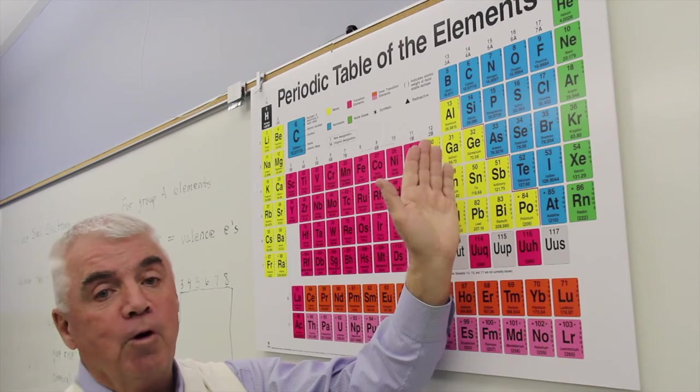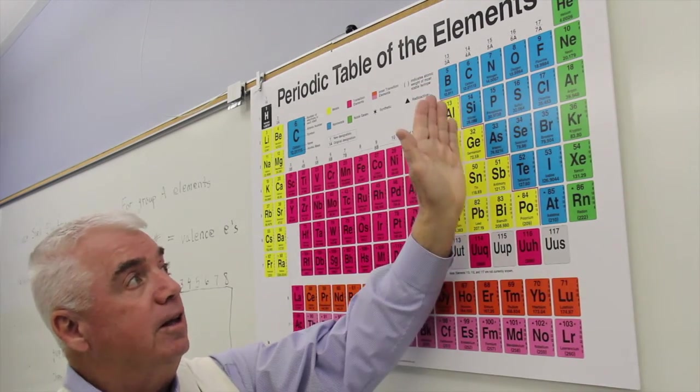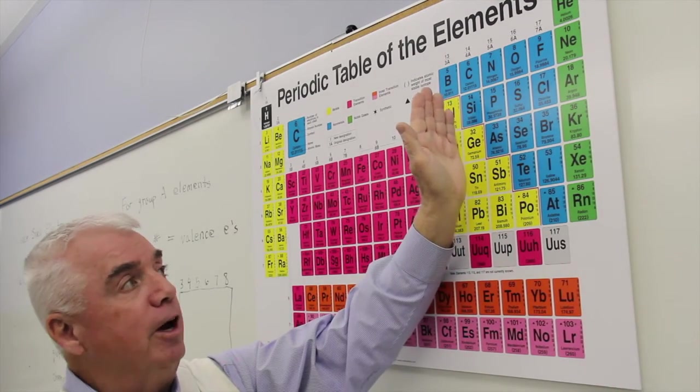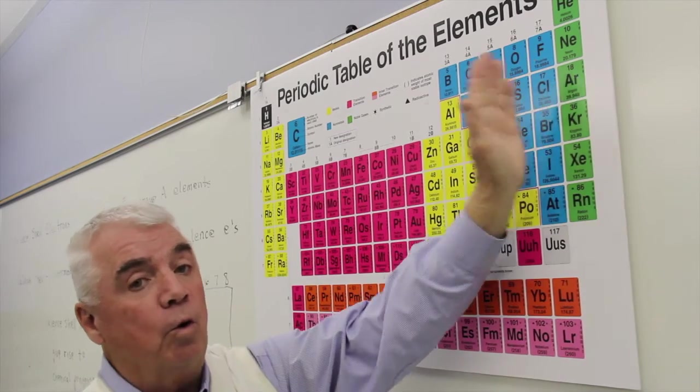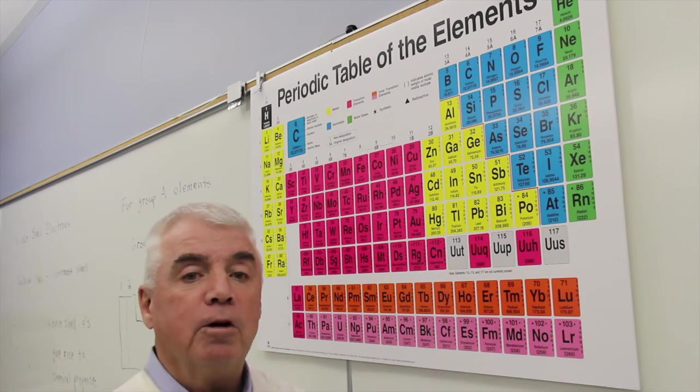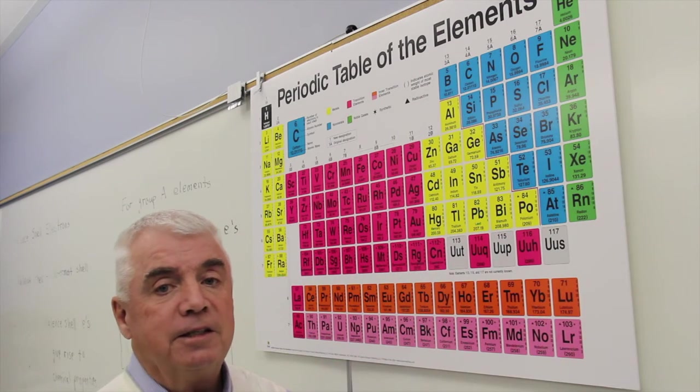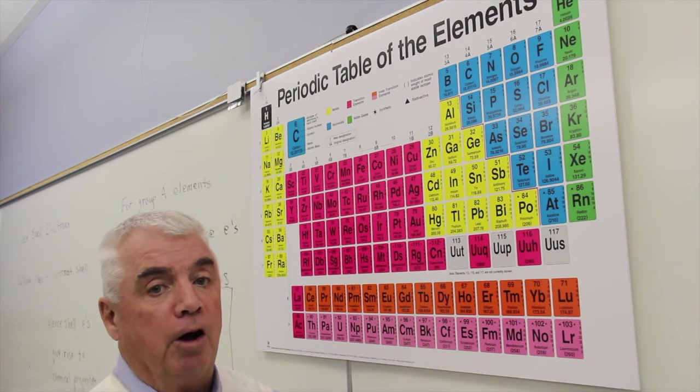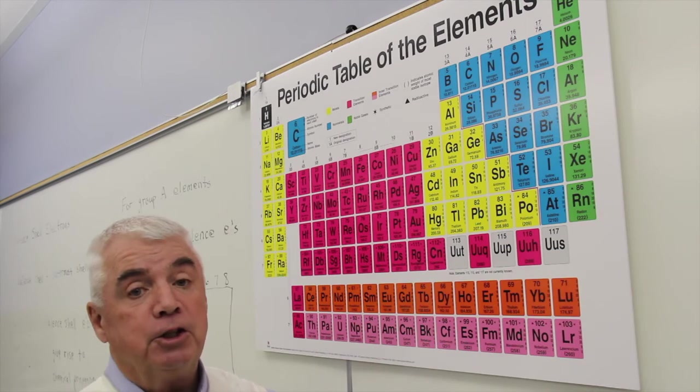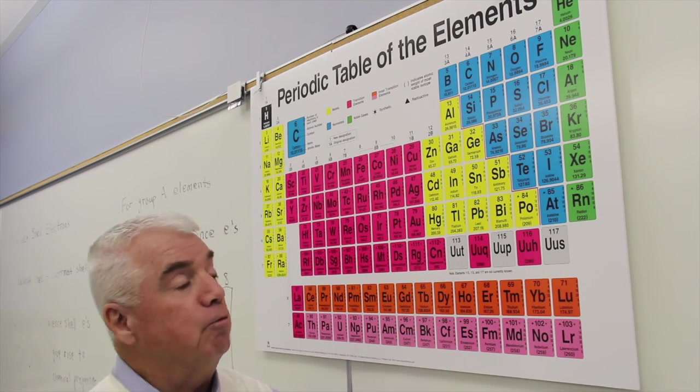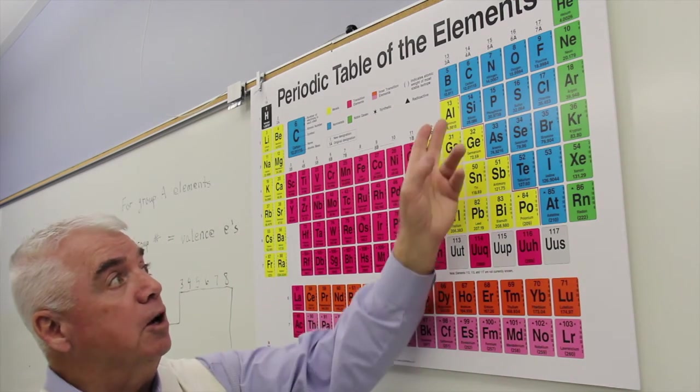Those elements in group 4A, well, four is exactly halfway. They could gain four or they could lose four, but four is a large number. And those elements in group 4A tend not to transfer electrons. They like to share electrons to form covalent bonds, and we'll talk about those later.